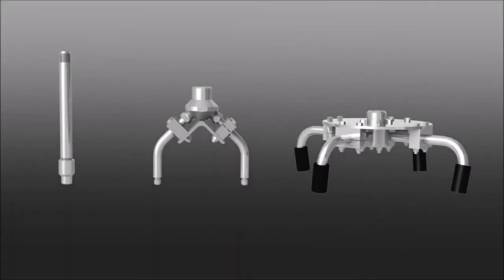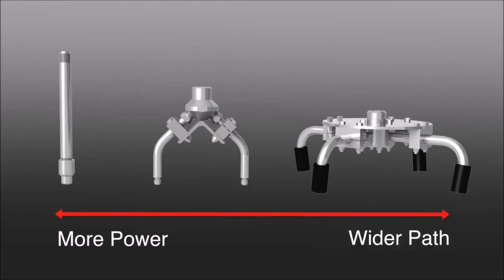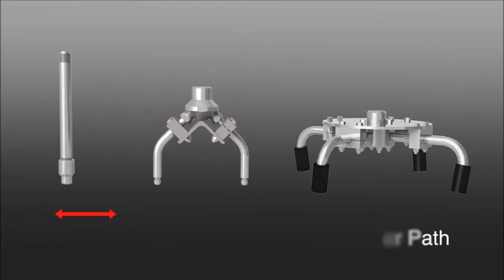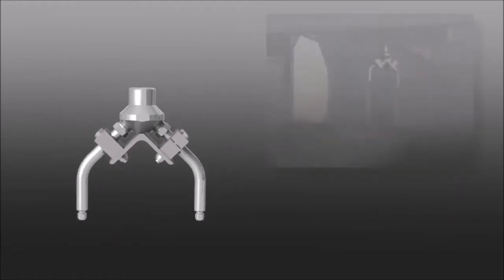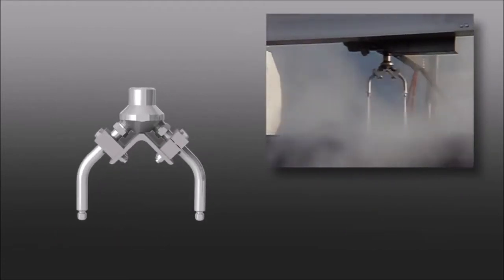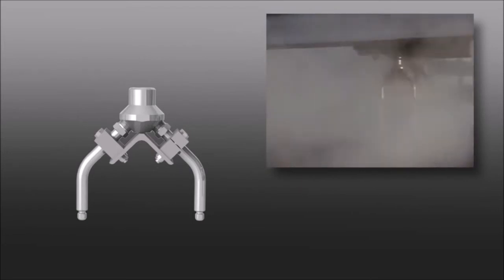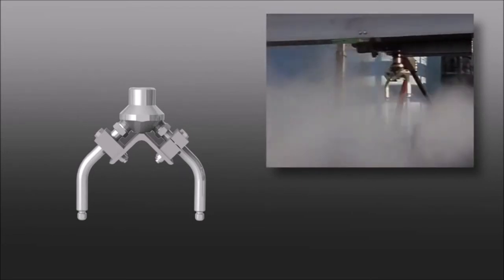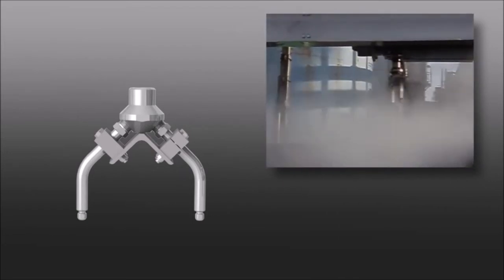There are several head options available, from one to four jets. Keeping in mind, fewer jets provide more power, while more jets provide a wider cleaning path. The most common head is our two-armed bullhorn style, which combines effective cleaning power and an 8-inch wide cleaning path to help you get the job done as quickly and efficiently as possible.